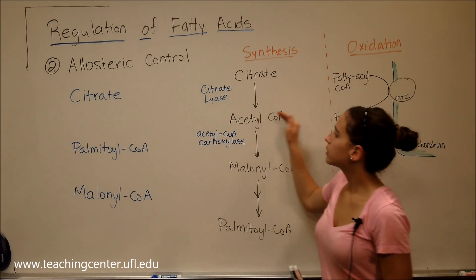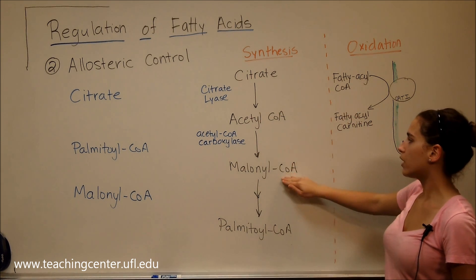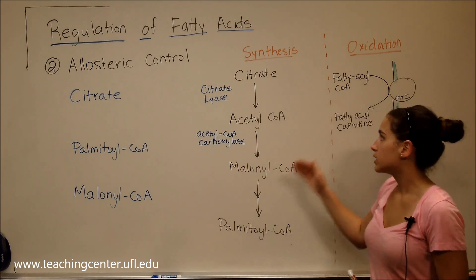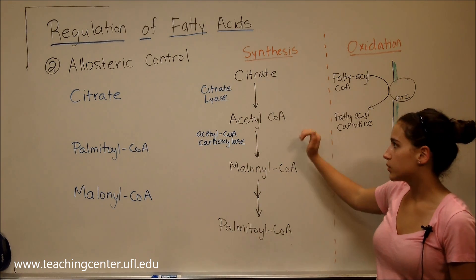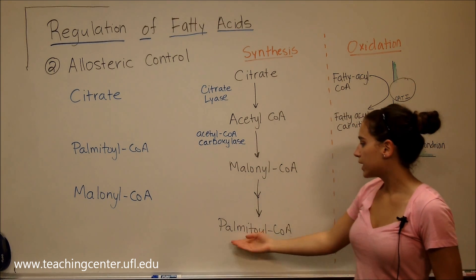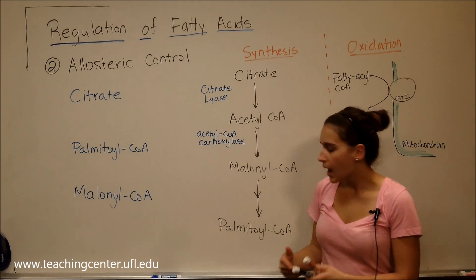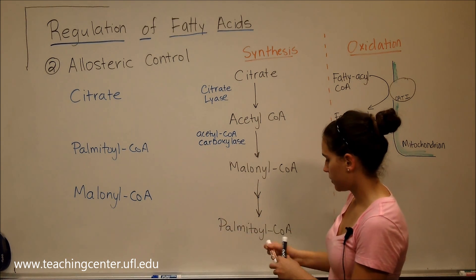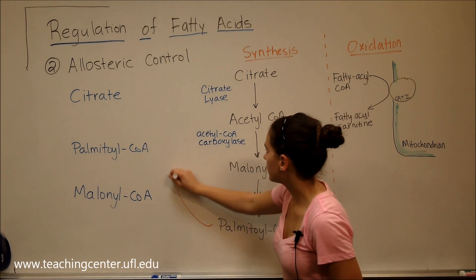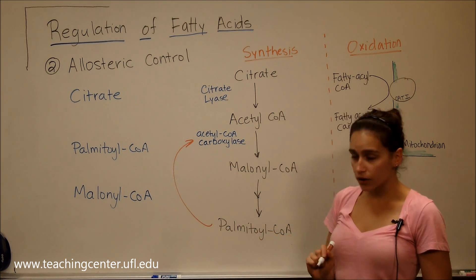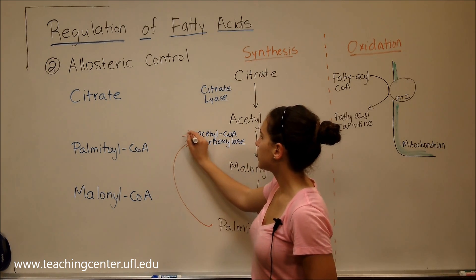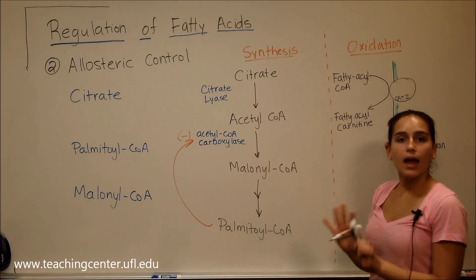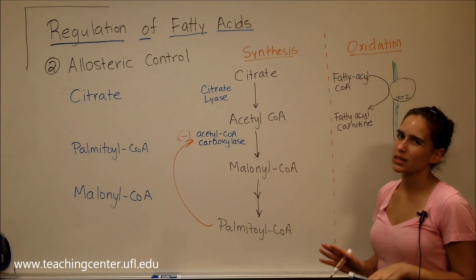After acetyl-CoA is converted to malonyl-CoA and then to palmitoyl-CoA, and more acetyl-CoA continues to arrive from the mitochondrion, we synthesize more and more fatty acids. As palmitoyl-CoA accumulates, it binds allosterically to acetyl-CoA carboxylase and inhibits it — telling the cell that we already have plenty of fats and don't need to keep making them.